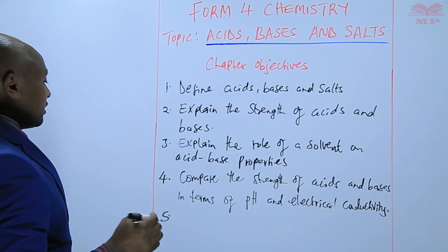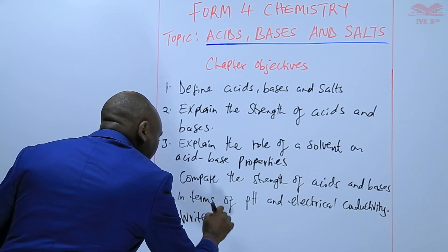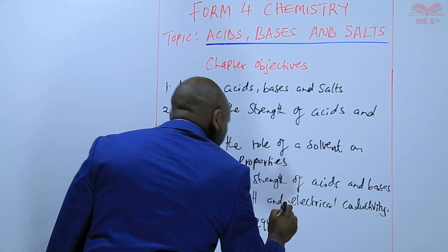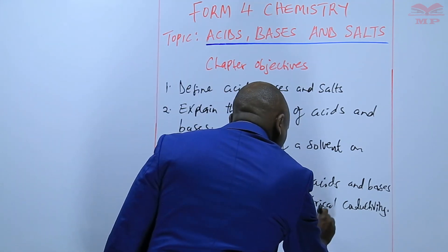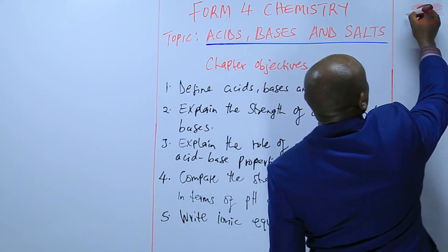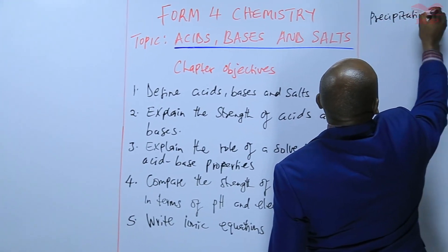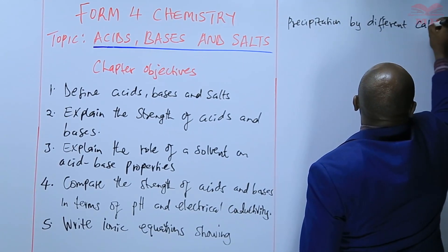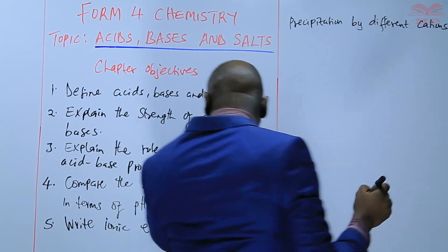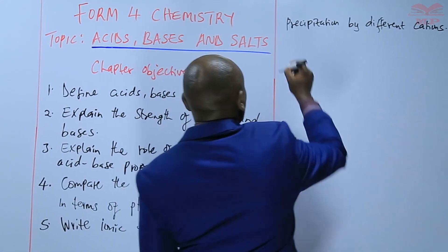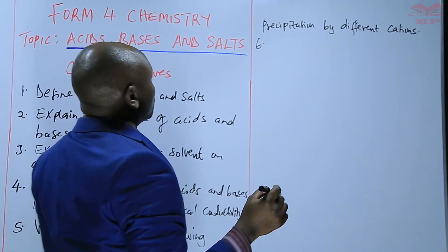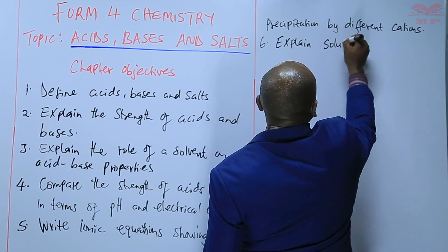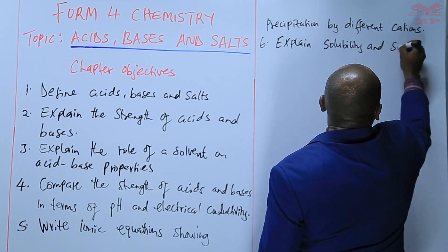Objective number five is to be able to write ionic equations showing precipitation by different cations. And then number six is to be able to explain solubility and solubility curves.